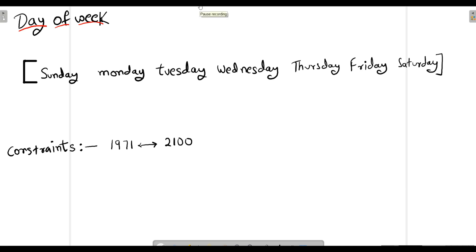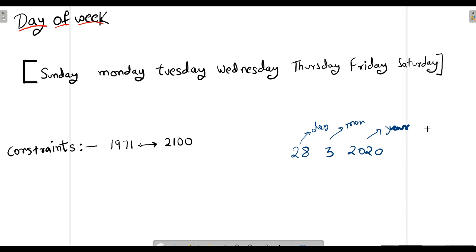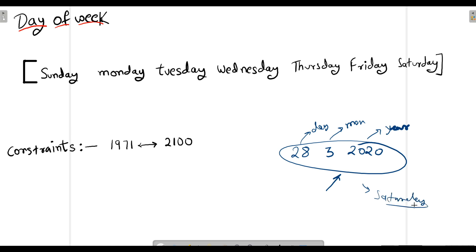In this question, we have a date — let's say the date is 28 March 2020. This is the day, this is the month, and this is the year. We have a date, and what we need to return is what the day of the week should be at that particular date. For this example, the answer should be Saturday.